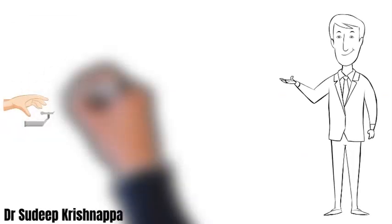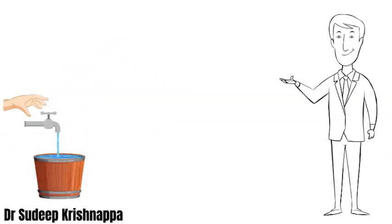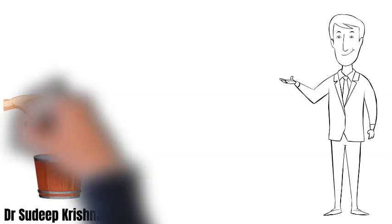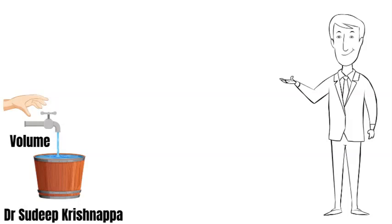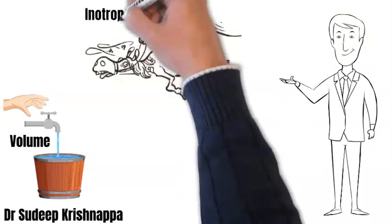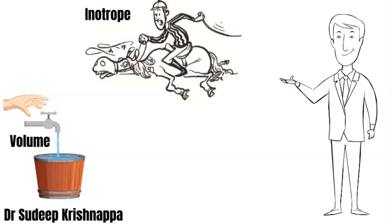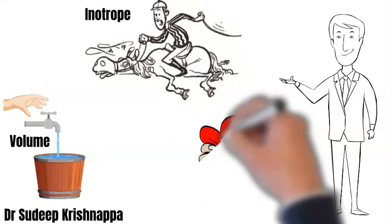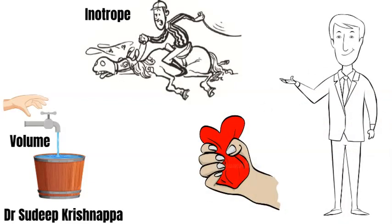If cardiac output is the cause, the next thing we need to look at is whether a decrease in preload is causing hypotension — if so, we give volume. If contractility or rate is the issue, we address that by administering an inotrope or an agent increasing heart rate. Contrarily, if vasodilatation or loss of vascular resistance is causing hypotension, we can use a pure alpha-1 agonist or vasopressor to restore blood pressure. In the subsequent slides, we will look at how to pick whether it's a problem with volume, contractility, or vascular tone from monitored parameters.